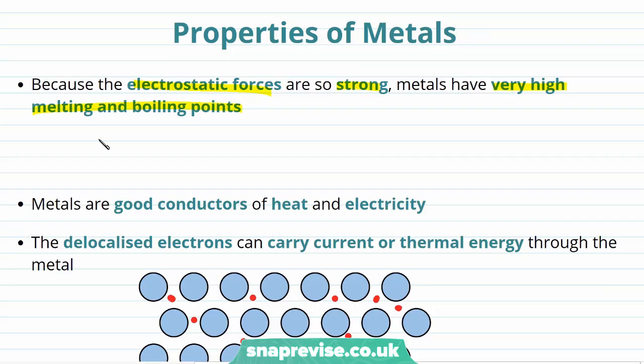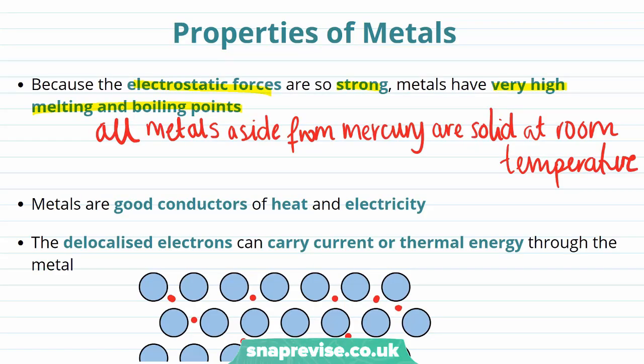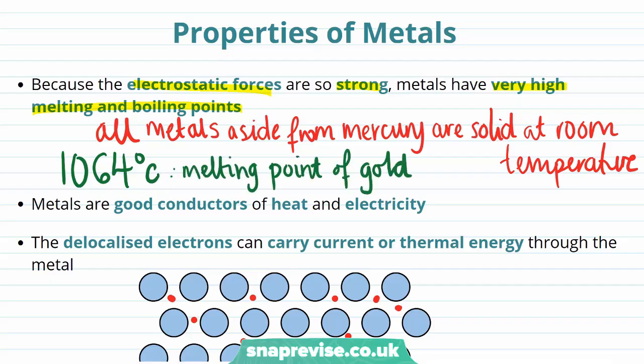This is why all metals, apart from mercury, are solid at room temperature. And the temperature would need to reach 1064 degrees Celsius in order to melt gold. Remembering that overcoming strong electrostatic forces requires a lot of energy, therefore resulting in higher melting or boiling points.